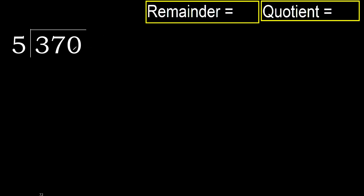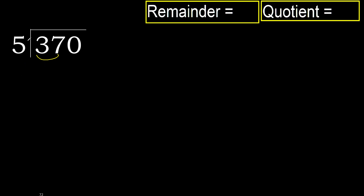370 divided by 5. 3 is less, therefore next. 37 is not less, therefore we work with 37.